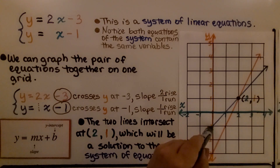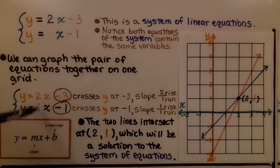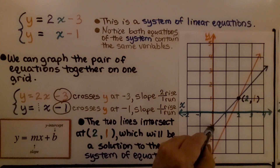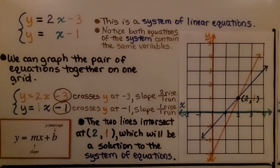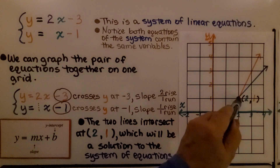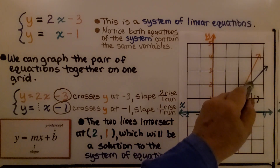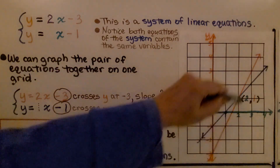For our second equation, we know it crosses the y-axis at negative 1. There's an invisible coefficient of 1 on x, so the rise over run is 1 up and 1 across. From negative 1, we go up 1 and over 1 to plot successive points, and we use a straight edge to draw the line just as we would for the first equation.